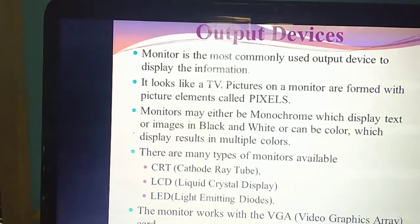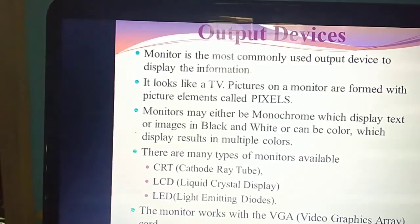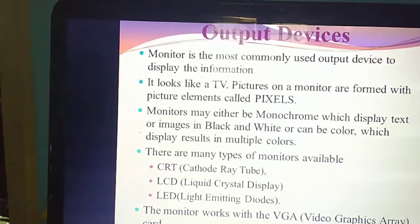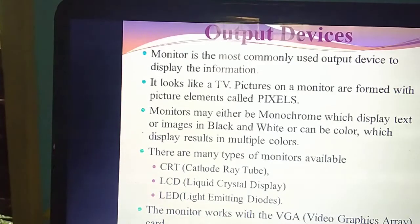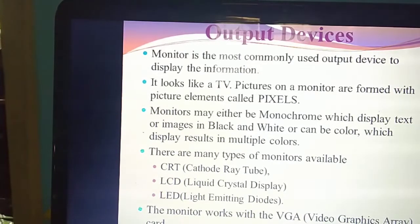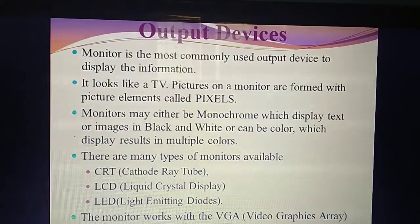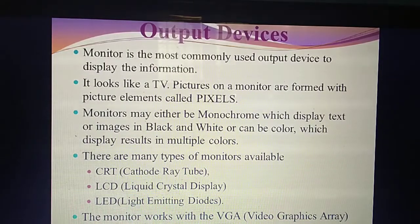Pictures on the monitor are formed using element called pixels — this is an important one-mark question. Please mark it in your textbook. Monitors may be monochrome — that means it will display text or images either in black and white format or in color format. In olden days, only black and white TVs were available. Likewise, monitors also may be either monochrome — displaying in black and white — or in color format, showing multiple colors.